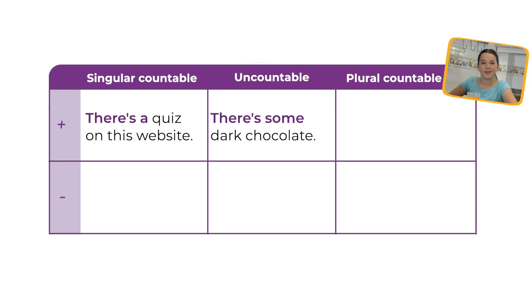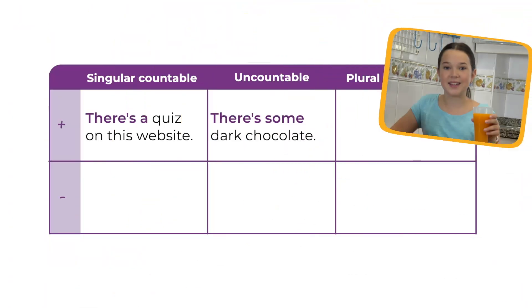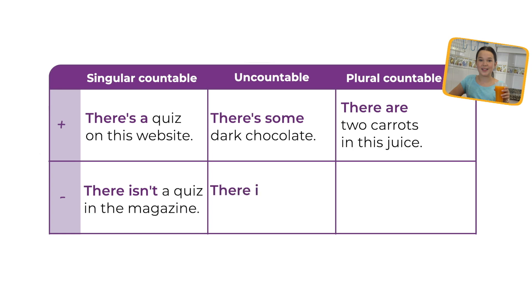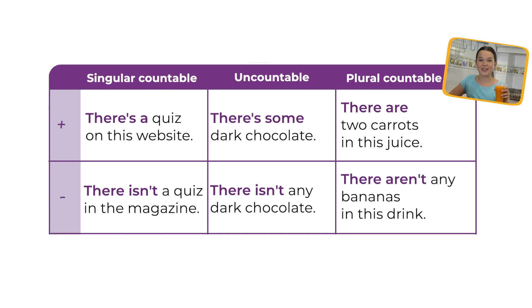We use 'there are' with countable plural nouns. For example: There are two carrots in this juice. We use 'there isn't' or 'there aren't' for negative sentences: There isn't a quiz in the magazine. There isn't any dark chocolate. There aren't any bananas in this drink.